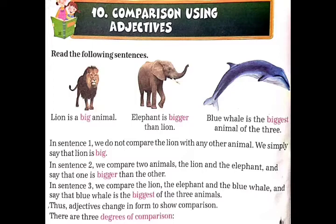In sentence second, we compare two animals, the lion and the elephant, and say that one is bigger than the other. Second sentence में, हम lion और elephant दो animals के बीच compare करते हैं. और कहते हैं कि एक दूसरे से बड़ा है.